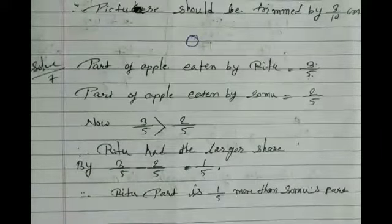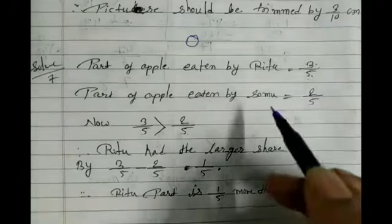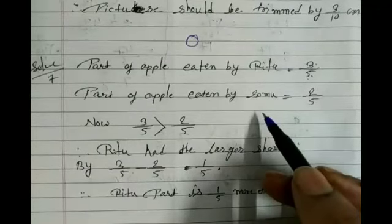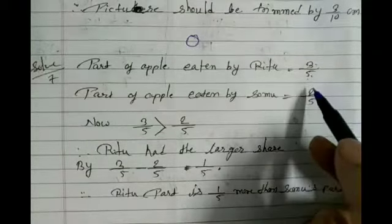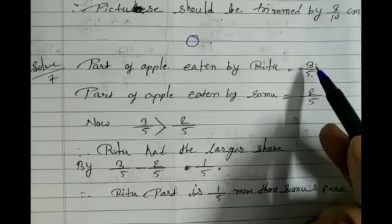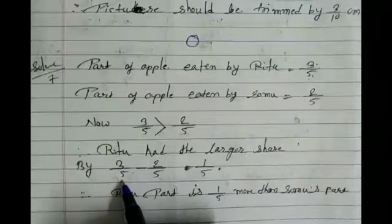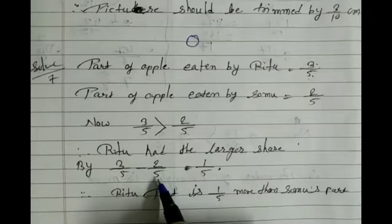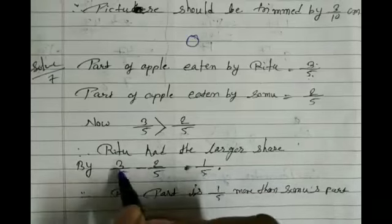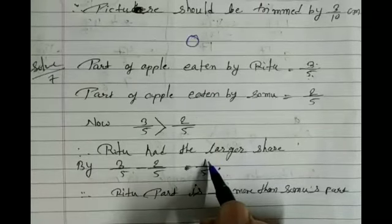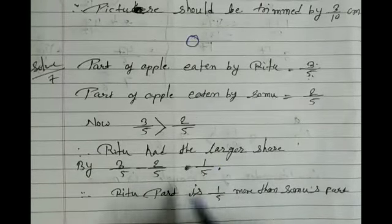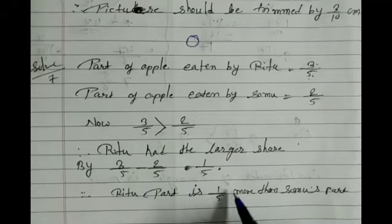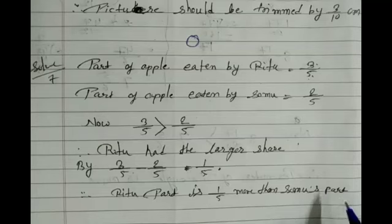How much more did Ritu eat than Somu? We subtract Somu's portion from Ritu's: 3/5 − 2/5. Since the denominators are the same, we write it once: 3 − 2 = 1, giving 1/5. So Ritu's part is 1/5 more than Somu's part.